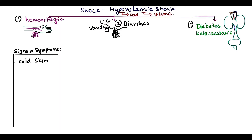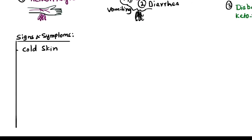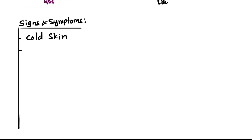Cold skin is one of the signs and symptoms. Cold skin occurs due to loss of peripheral blood supply to the skin, caused by vasoconstriction in response to the shock. Additionally, rapid heart rate and thready pulse are observed — tachycardia is seen in the hypovolemic response.